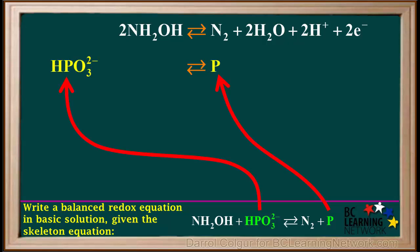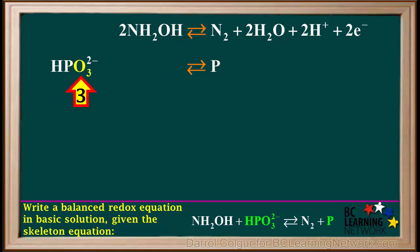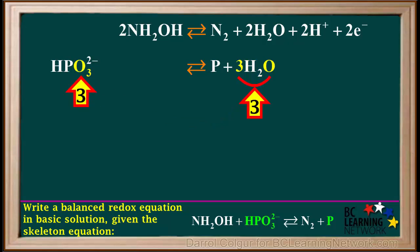The other half-reaction involves HPO3 2- forming P. We see there is one P atom on both sides, so phosphorus is balanced. There are three oxygen atoms on the left and none on the right, so we add three water molecules to the right side. We now have three oxygen atoms on both sides, so oxygen is balanced.